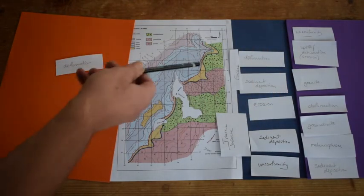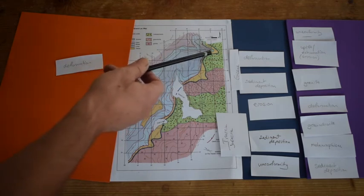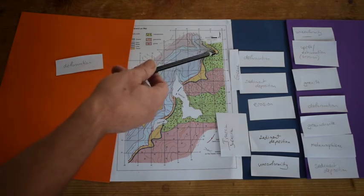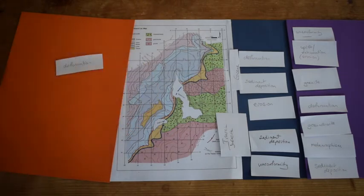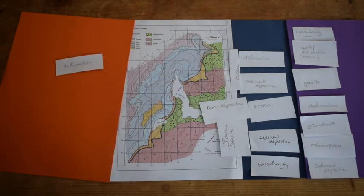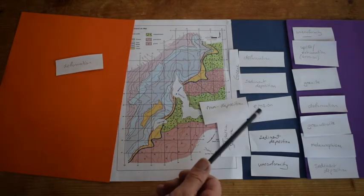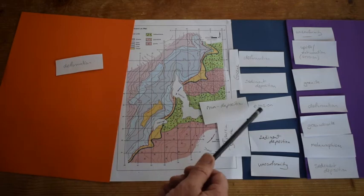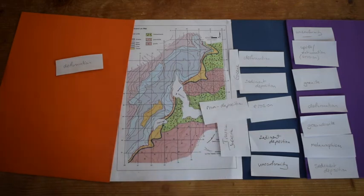But of course the alternative is that in this particular area there was never any deposition and it was a hiatus between the deposition of the Trias and the deposition of the Eocene. So an alternative is non-deposition, and given the information on the map we cannot resolve this problem, so let's just keep them both in the story.